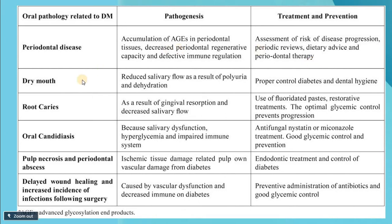Regarding xerostomia, which also affects plaque accumulation and periodontal disease, the pathogenesis results from reduced salivary flow due to polyuria and dehydration. Treatment involves proper controlled diabetes and dental hygiene measures. Multiple caries occur due to gingival recession and decreased salivary flow; fluoridated restorative treatment and optimal glycemic control will prevent progression. Oral candidiasis can also occur due to salivary dysfunction, hyperglycemia, and impaired immune system, treated with antifungals like nystatin or miconazole and good glycemic control.